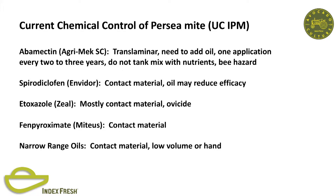Current chemical control: abamectin, unfortunately, is also one of the best materials for perseamite. It's nice to have one material that kills the two major pests in avocados, but you should be rotating chemistries. I can't emphasize enough that resistance is on the way. Anna Howell mentioned there is complete resistance to abamectin in Washington State from tetranychid spider mite species on apples. So it can happen, and it has happened—they can't use this material anymore. We've got Envidor, Zeal, Miteus, and narrow range oils. Everything else is a contact material, with the exception of abamectin or generic knockoffs.